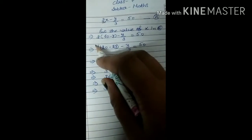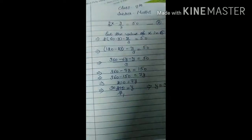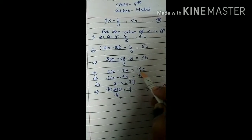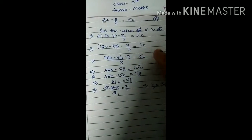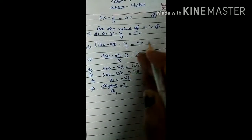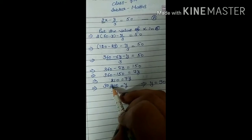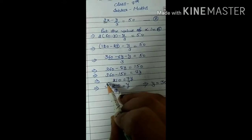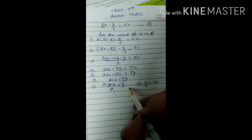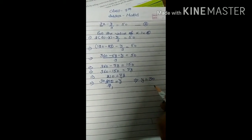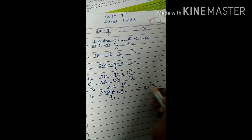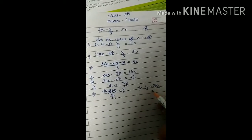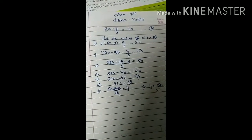Taking LCM as 3: 3 × 120 − 3 × 2y − y = 3 × 50, which gives 360 − 6y − y = 150, so 360 − 7y = 150. Shifting 360 to the right: −7y = 150 − 360 = −210. Dividing both sides by 7, we get y = 30. So the number of correctly answered questions is 30.